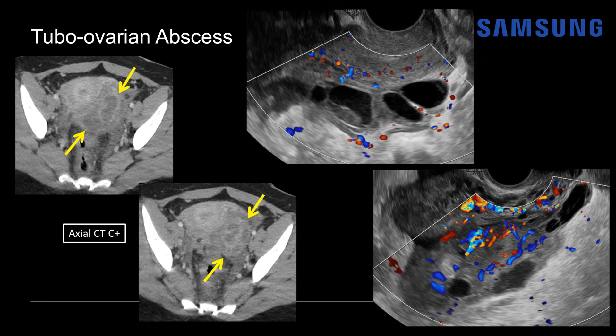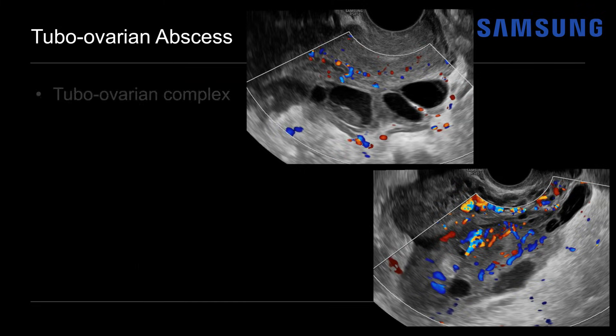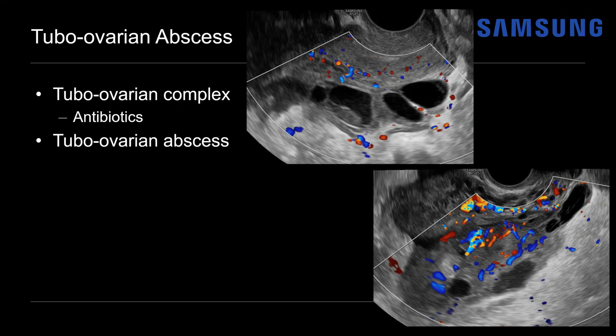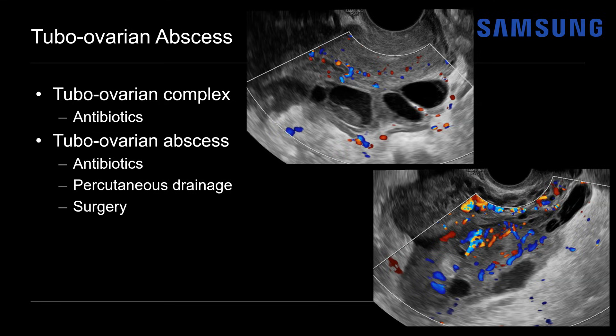To compare: a tubo-ovarian complex, where piosalpinx adheres to the ovary but ovarian architecture is still identifiable, often responds well to antibiotics alone. A tubo-ovarian abscess is also initially treated with antibiotics, but is more likely to require percutaneous drainage or surgery. This patient was initially treated with antibiotics but then required laparoscopy and pelvic washout to treat the tubo-ovarian abscess, after which she did well.